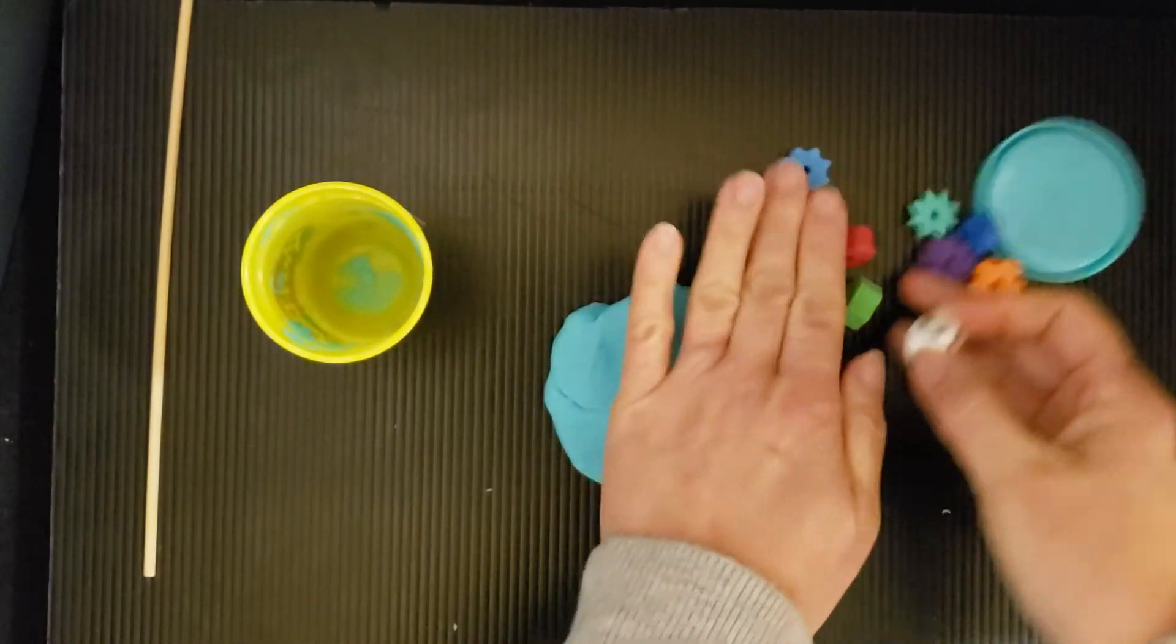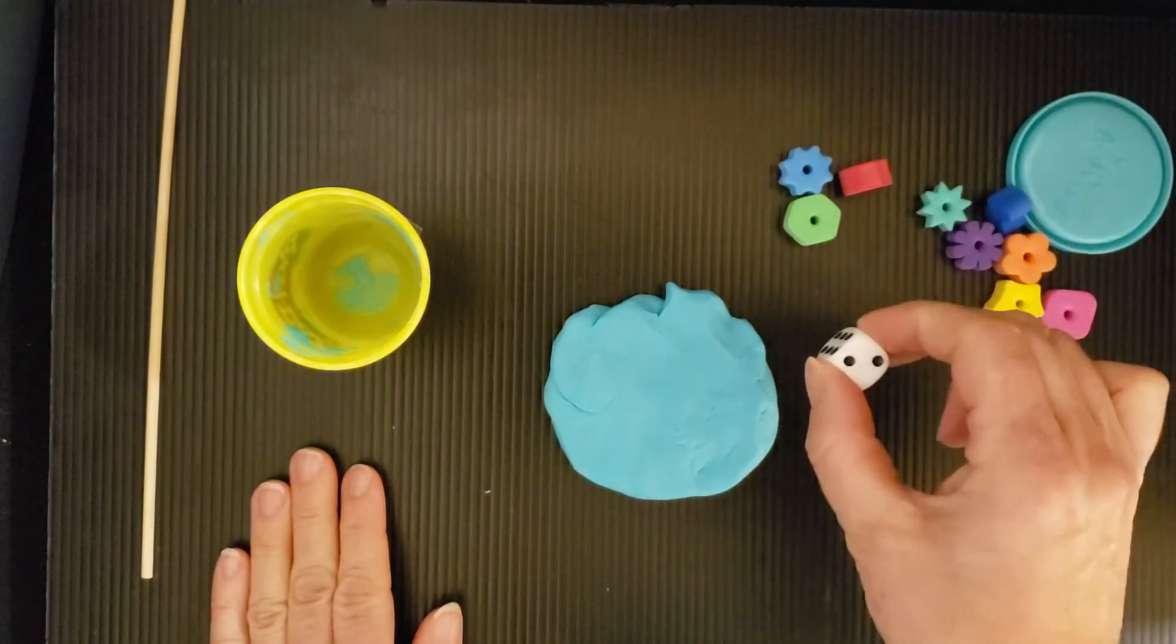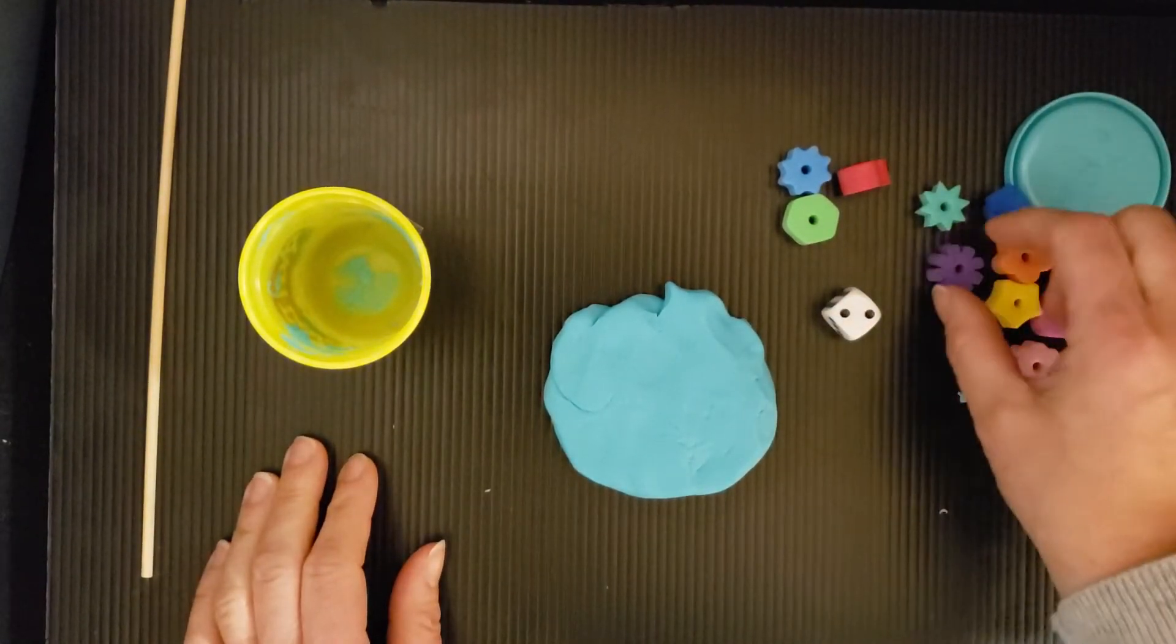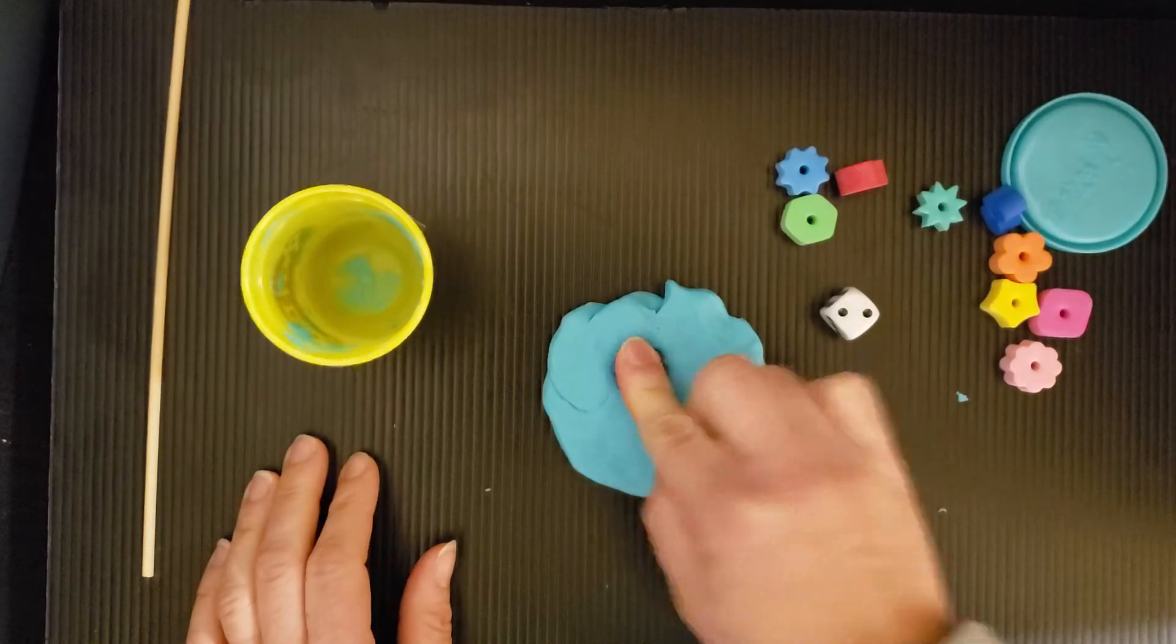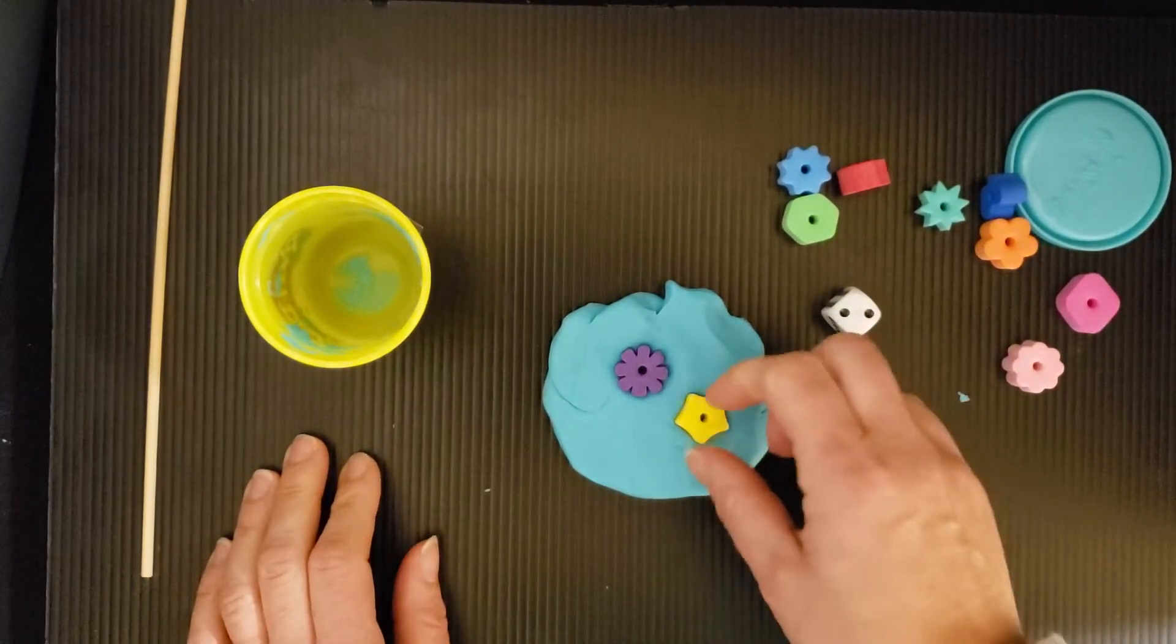And you could roll the dice. I got a two. So I'm going to pick two shapes to push in. One, two. And then pull them out.